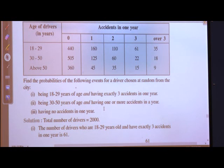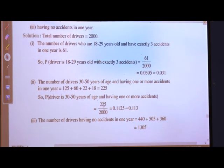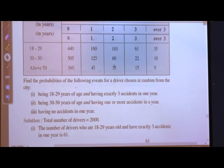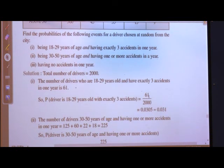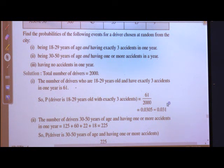Let us see the solution. Total number of drivers is 2000. The number of drivers aged 18 to 29 with exactly 3 accidents in 1 year is 61 — you can see this in the table: age 18 to 29, accidents 3, frequency 61. So the probability of a driver being 18 to 29 years old with exactly 3 accidents equals 61 upon 2000, which is 0.0305.